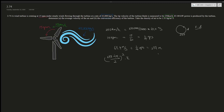The circumference divided by pi gives the diameter; half the diameter is the radius; radius squared times pi gives the area. This gives approximately 6,140 square meters for the cross-sectional area of the wind turbine.